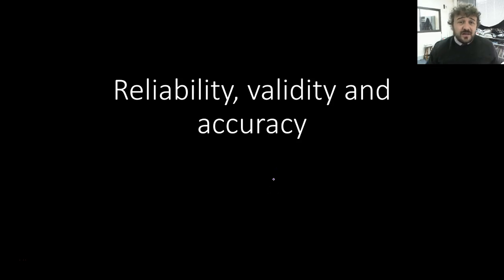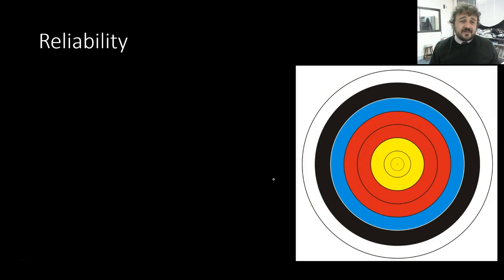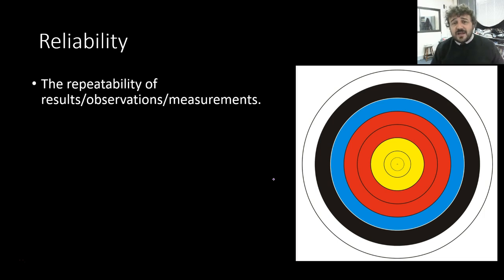Today we're going to cover three fairly poorly misunderstood concepts in science, but they're also three really, really important ones, and without them we're not doing science. So let's talk about reliability — for our experiments and second-hand data. When we're talking about reliability, we're talking about the repeatability of measurements, results, and observations.